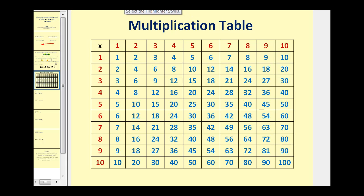If you don't know your multiplication tables all that well, you might find it helpful to have a multiplication table out. For example, on the previous problem, if I couldn't find the factors of 12, I could look for 12s in this table. Here's a 12, which tells me two factors of 12 would be positive 3 and positive 4. There's another 12 here that tells me the factors would be 6 and 2. The only one missing from this 10 by 10 table would be 1 times 12.